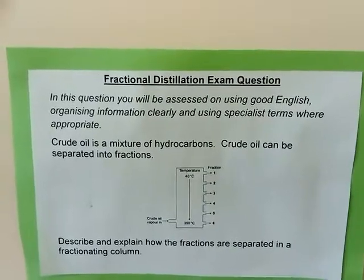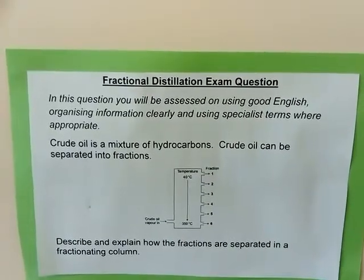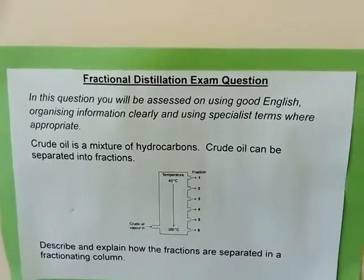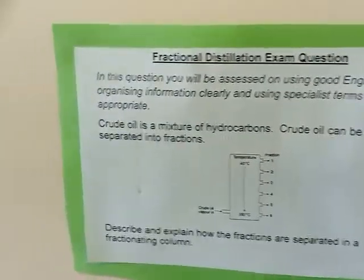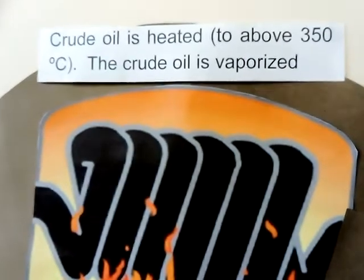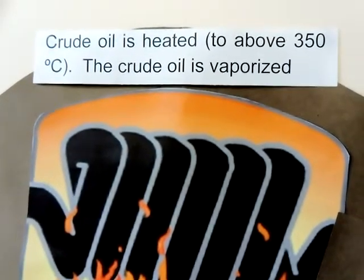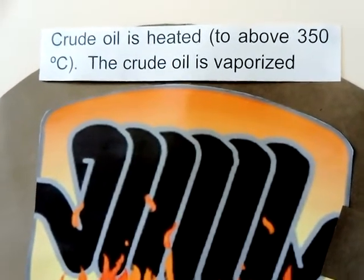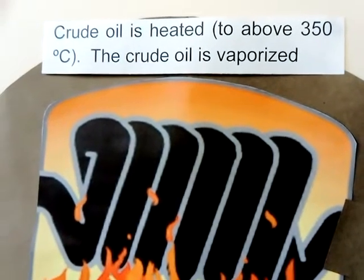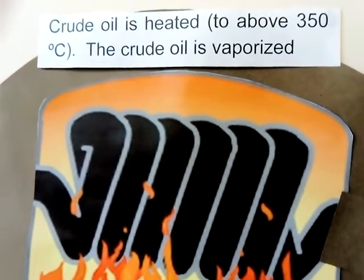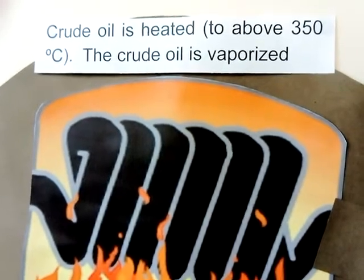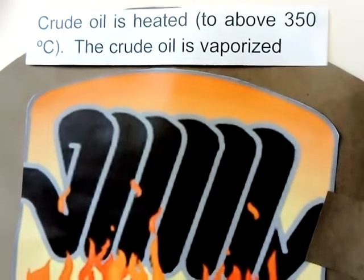You must also concentrate on using clear English and good grammar. The first stage is that our crude oil is heated to 350 degrees, which turns it into a vapor — the different chains all vaporize and turn into gases.